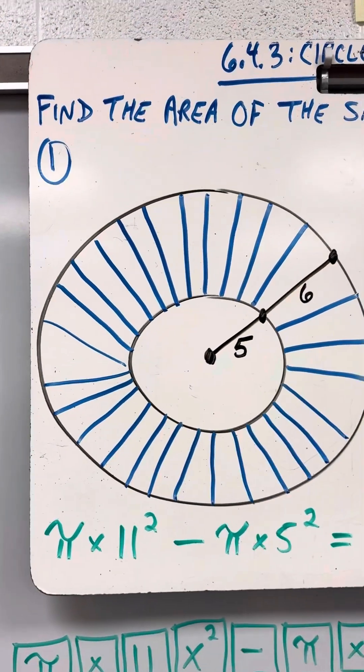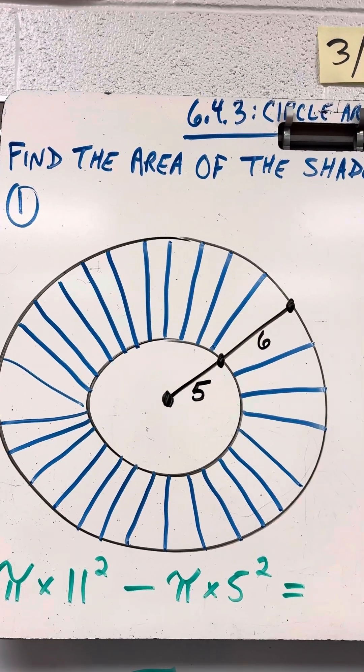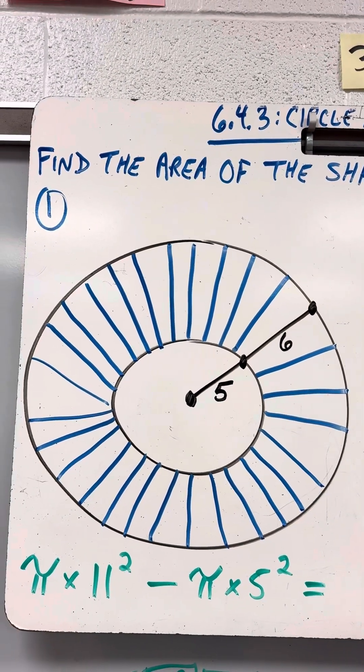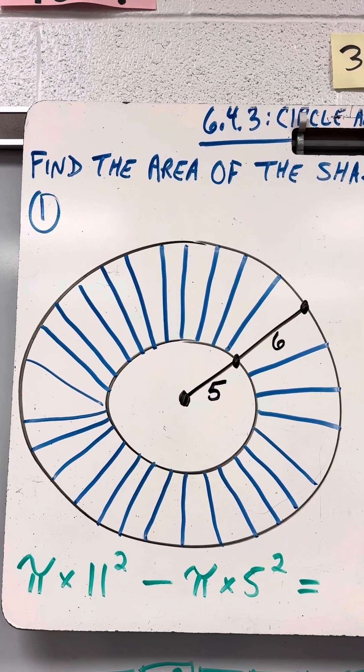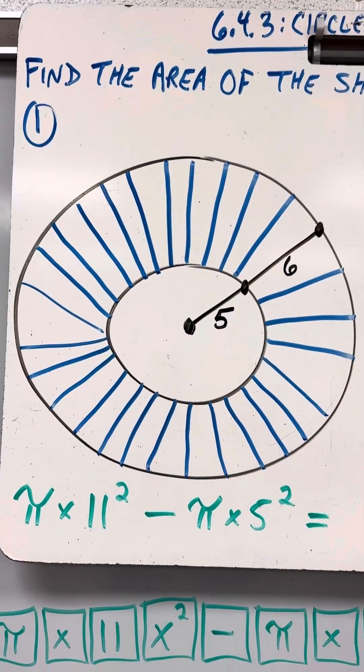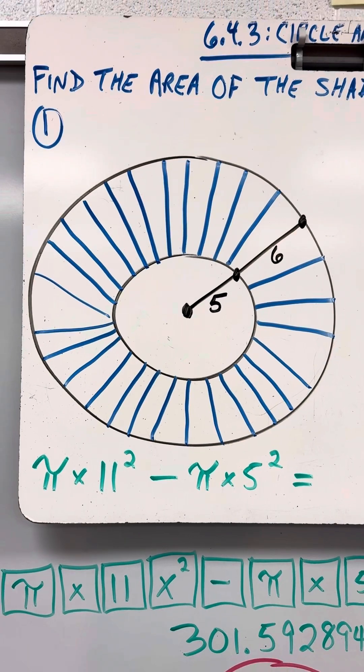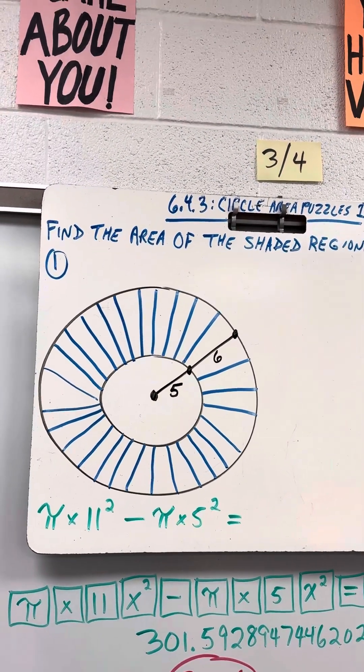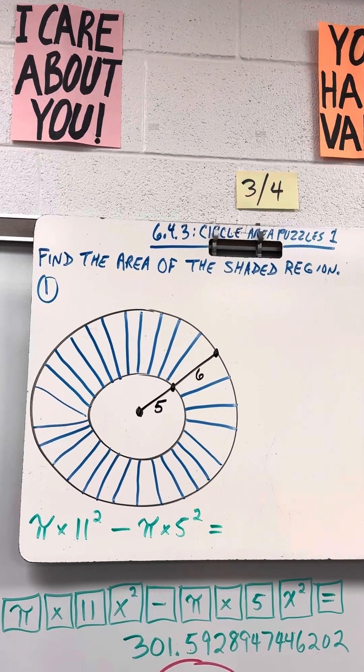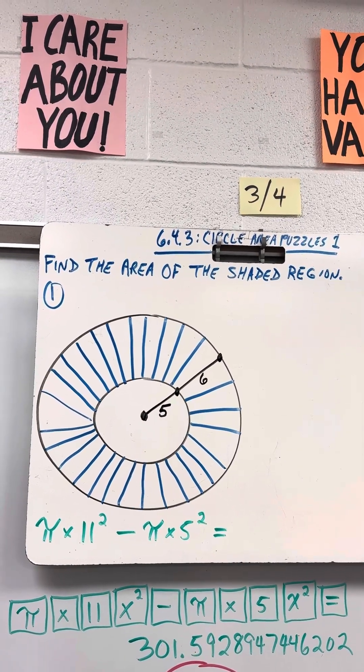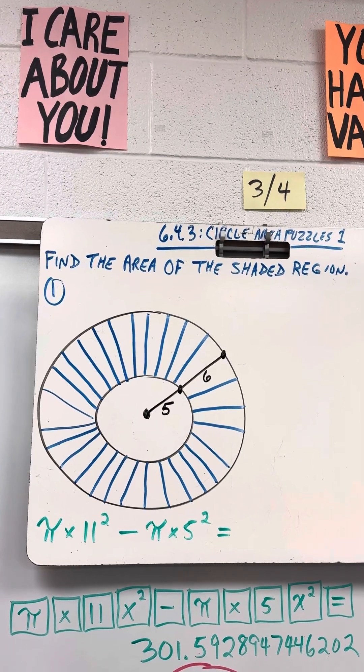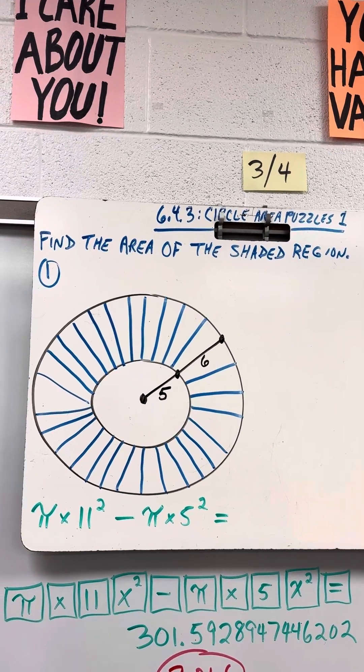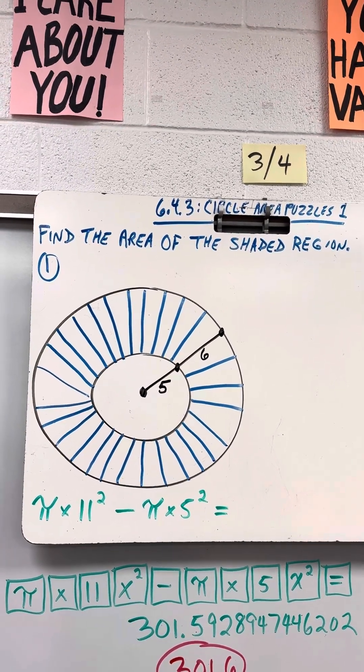So we're going to do pi times 11 squared minus pi times 5 squared. I want you to take your phone calculator, turn it sideways, hit pi, then the times key, then 11, then the x squared key, then hit minus, then pi, then the times key, then 5, then the x squared key, and then equals. Try this on your calculator.